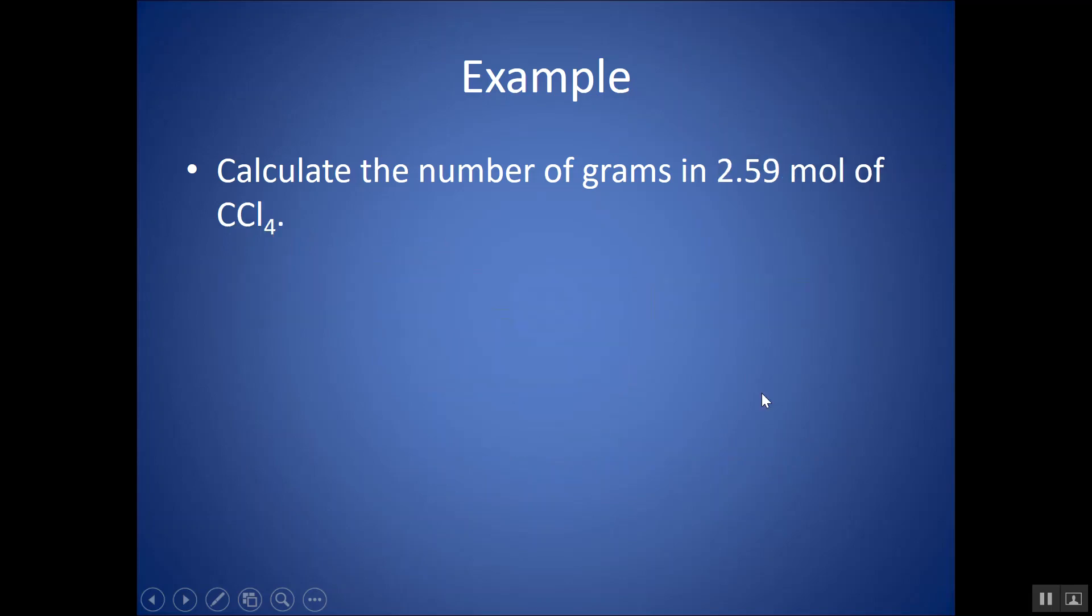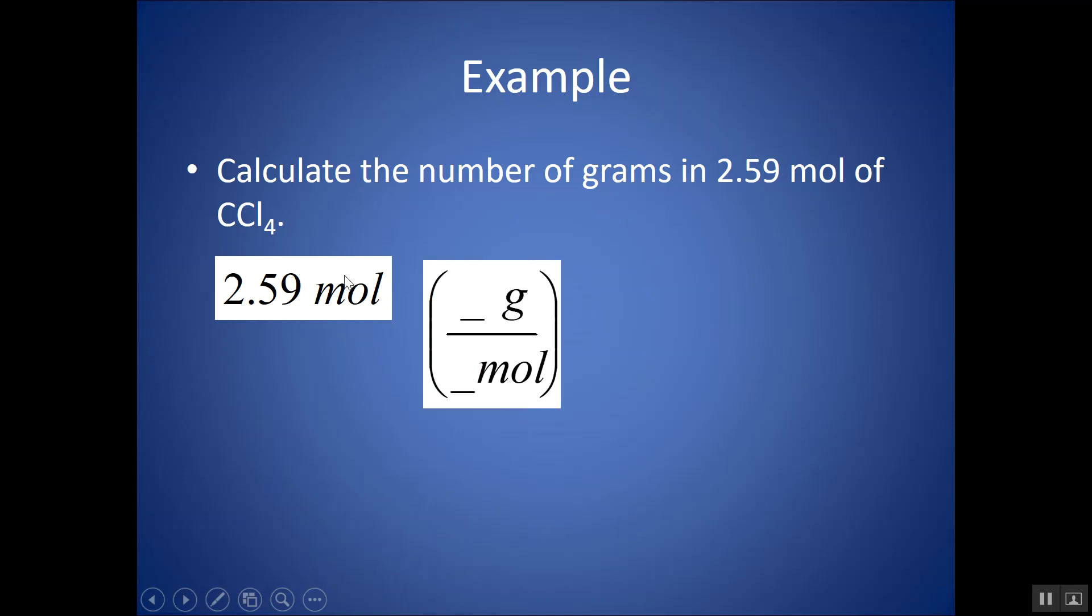Let's look at this example. Calculate the number of grams in 2.59 moles of CCl4. So always write the number that you're starting with with its unit. I'm starting with 2.59 moles. And let's think about, I want to convert this into grams. So what do I need in my conversion factor? I want moles on the bottom so it cancels out. I want grams on top so that that's what's left behind. Anytime I'm converting between grams and moles, I need to calculate the molar mass because that's going to be in my conversion factor.